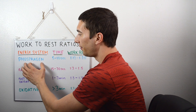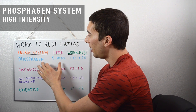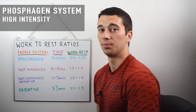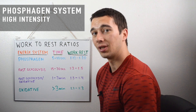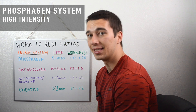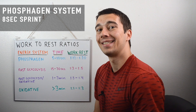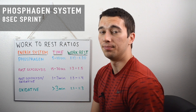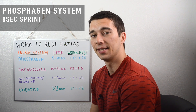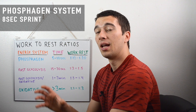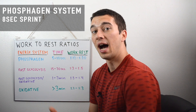Let's go back to the phosphagen system and go through an example. The phosphagen system covers things like box jumps, broad jumps, and sprinting — anything about 10 seconds or less at really high intensity. Let's use the example of an 8-second sprint. Say we're doing 60-yard sprints with our athletes and the athlete on average is taking about 8 seconds. We want to tell these high schoolers how much they should rest — two minutes, three minutes, four minutes? How do we decide that?